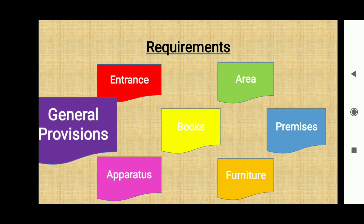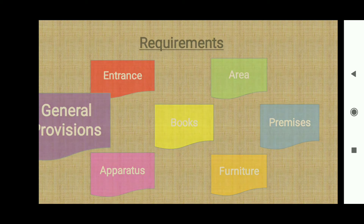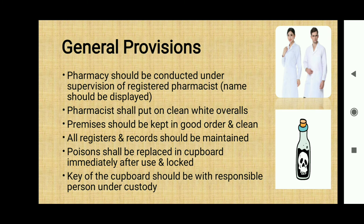The next requirement is general provisions. A pharmacy should be conducted under the supervision of a registered pharmacist, and the name of this pharmacist should be displayed and easily visible. A pharmacist should put on a clear white overall, that means an apron. The premises should be kept in good order and clean. All registers and records should be maintained. Poisons shall be replaced in a cupboard immediately after use, locked, and the key kept with a responsible person in custody.